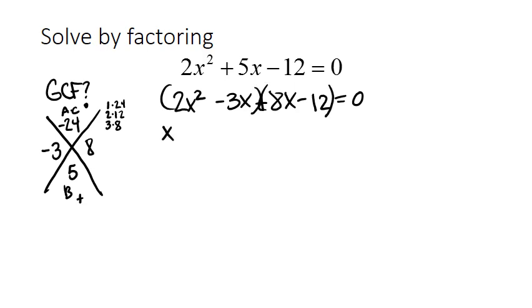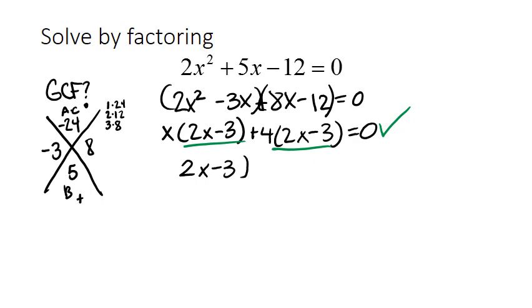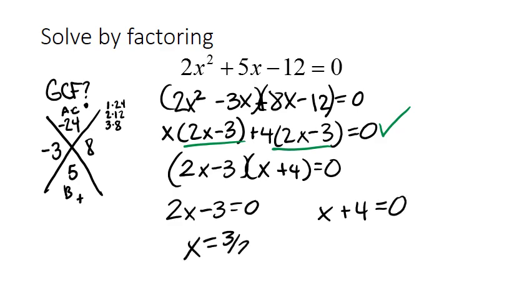My GCF of the first set is x. The GCF of my second set is 4. Here's my second checkpoint. I have the same thing twice, which is what I need. If I factor out that common factor of 2x minus 3, I'm left with x plus 4. Now I can set each factor equal to 0 and find my solutions. Here I end up with x equals 3 halves, and here I end up with x equals negative 4.